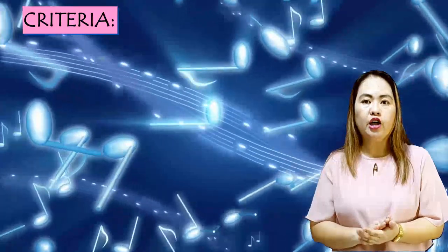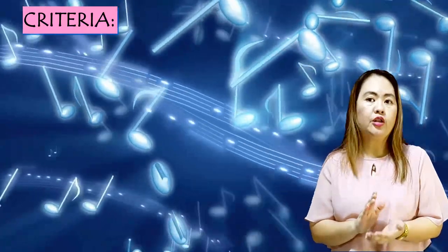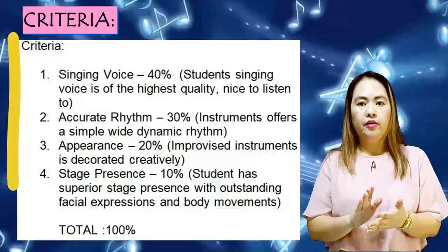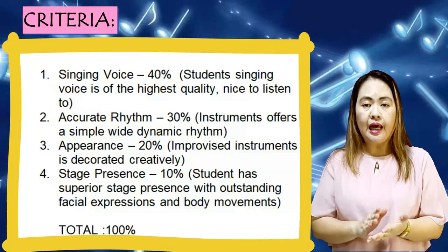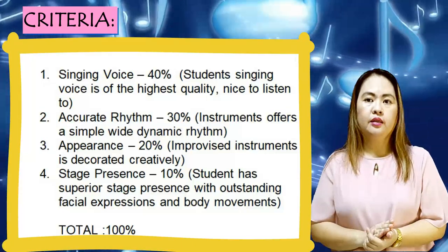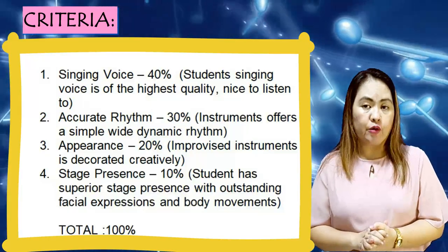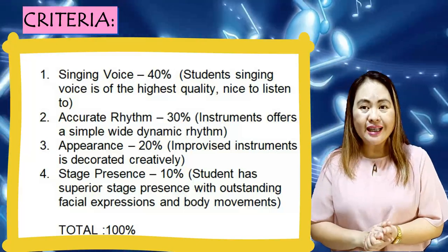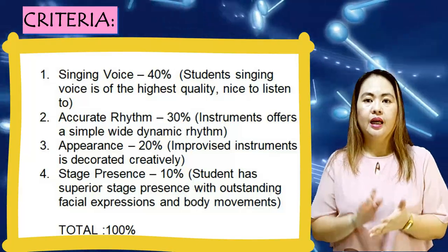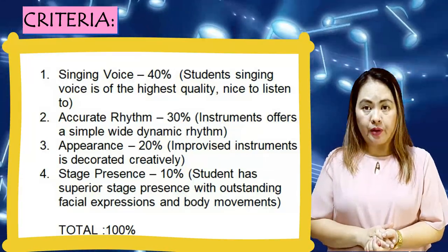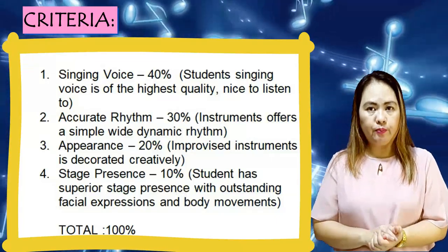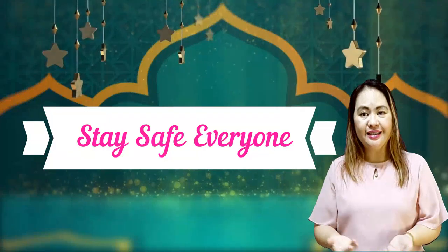To help you in preparing your performance, please refer to the following criteria or rubrics to understand how to evaluate your performance. Criteria: Singing voice is 40% — student's singing voice is of the highest quality, nice to listen to. Accurate rhythm is 30% — instrument offers a simple, wide dynamic rhythm. Appearance is 20% — improvised instruments are decorated creatively. Stage presence is 10% — student has superior stage presence with outstanding facial expressions and body movements, for a total of 100%. Once again, this is Ma'am May Magsalid, your music teacher. I hope that you learned a lot from today's music class. Stay safe everyone, and enjoy the rest of the day.